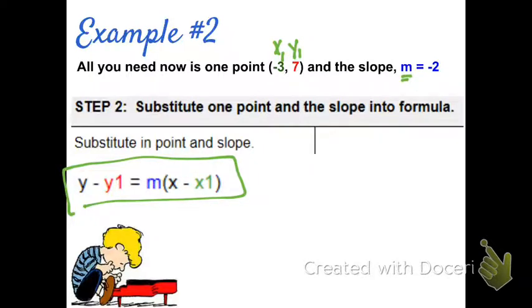So the black letters and parentheses and minus signs and equal signs all stay the same. I'm just going to substitute in y1, m, and x1. So I have y minus y1, which is 7, equals the slope, which is negative 2, parentheses, x minus, and then x1 is negative 3.